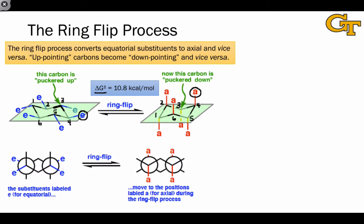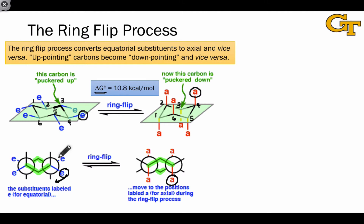We can also visualize the ring flip from a Newman projection perspective. The carbon in the front, which is pointing down in the original structure, is flipped into an up position after the ring flip, and the carbon in the back, which was pointing up, is flipped into a down position. This causes a series of rotations that convert equatorial into axial substituents — for example, one substituent rotates and ends up in an axial position, while the other equatorial substituent in the back rotates counterclockwise and also ends up axial. The other six axial substituents get flipped into equatorial positions after the ring flip as well.